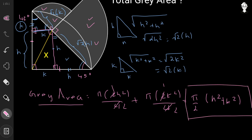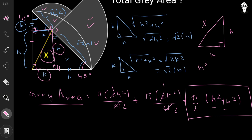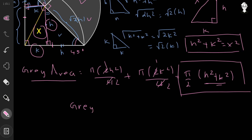We still need to express h² + k² in terms of x. Looking at the right triangle where the height is h, the base is k, and the hypotenuse is x, the Pythagorean theorem gives h² + k² = x². Substituting this, the gray area becomes π/2 · x².